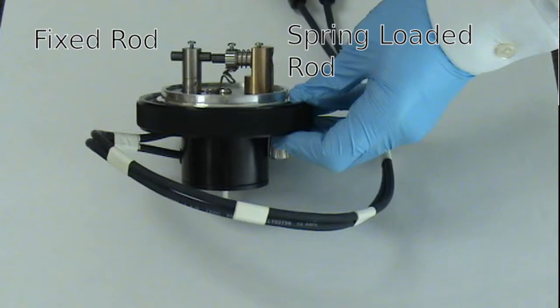The carbon rod head has two posts, one with a fixed rod and the second with a spring-loaded rod. The fixed rod will only need to be replaced when the flat is compromised.